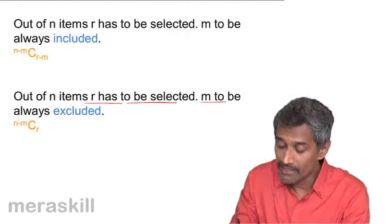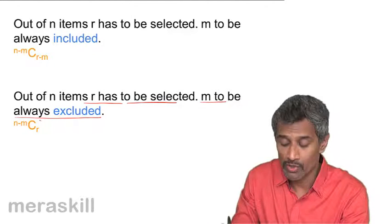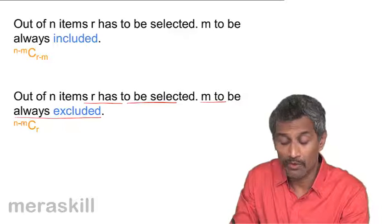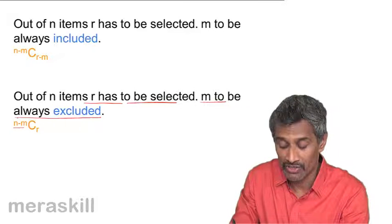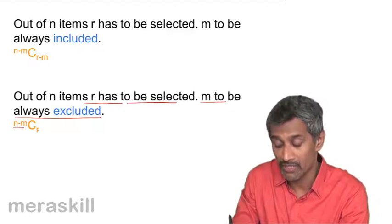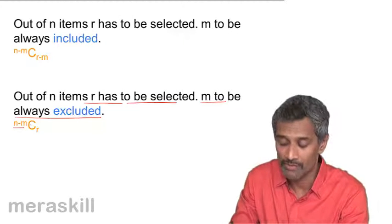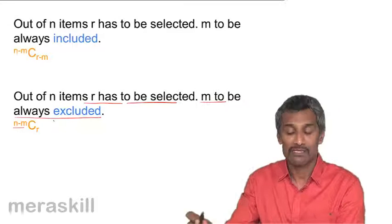Out of N items, R has to be selected, M to be always excluded—that means the number of terms available for selection is N minus M, but you need to select all R out of this N minus M. So hence we have N minus M C_R.